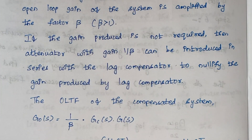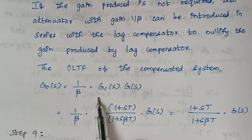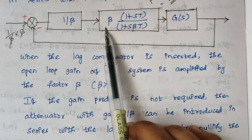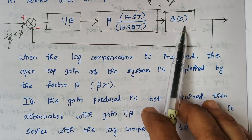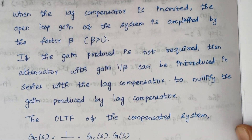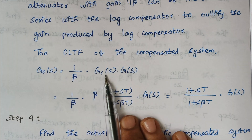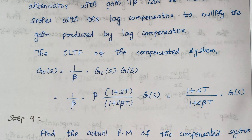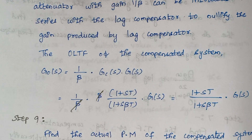The open loop transfer function of the compensated system is given by: (1/beta) × [lag compensator transfer function] × [uncompensated system transfer function]. When values are substituted, the beta terms cancel each other, leaving the remaining terms.